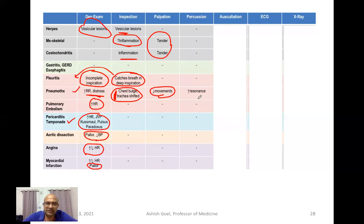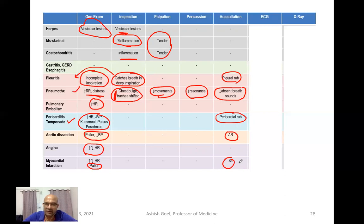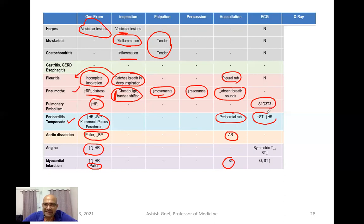On percussion, in pneumothorax you will find a hyper-resonant or tympanic note. On auscultation: in pleuritis you may find a pleural rub; absent breath sounds indicate pneumothorax; a pericardial rub sensitizes you to pericarditis; aortic regurgitation should make you think of aortic dissection; and an S4 heart sound suggests myocardial infarction. On ECG: in pulmonary embolism the pattern is S1Q3T3; in pericarditis there is tachycardia and elevated ST segment with concavity upwards; in angina there are symmetrical T wave inversions and ST depressions; in myocardial infarction there may be Q waves and ST segment elevation.